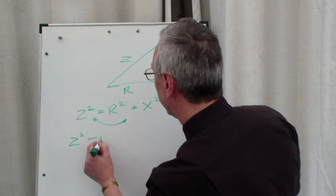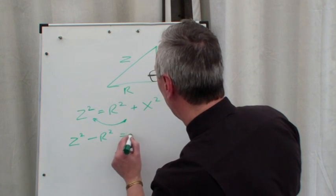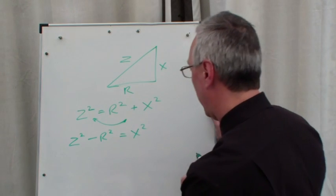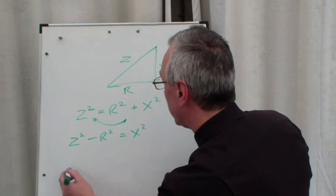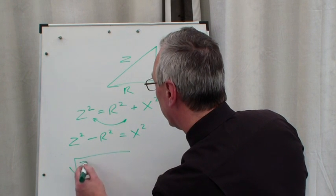So z² - r² = x². Again, let's move the squared across, so √(z² - r²) = x.